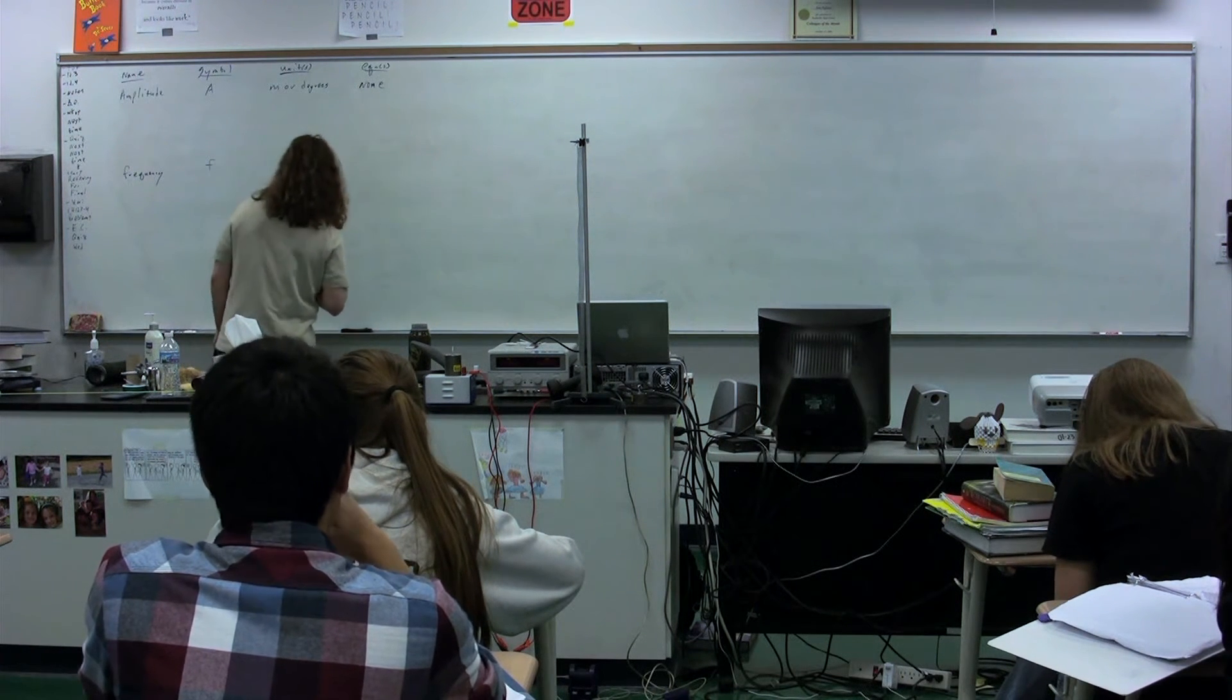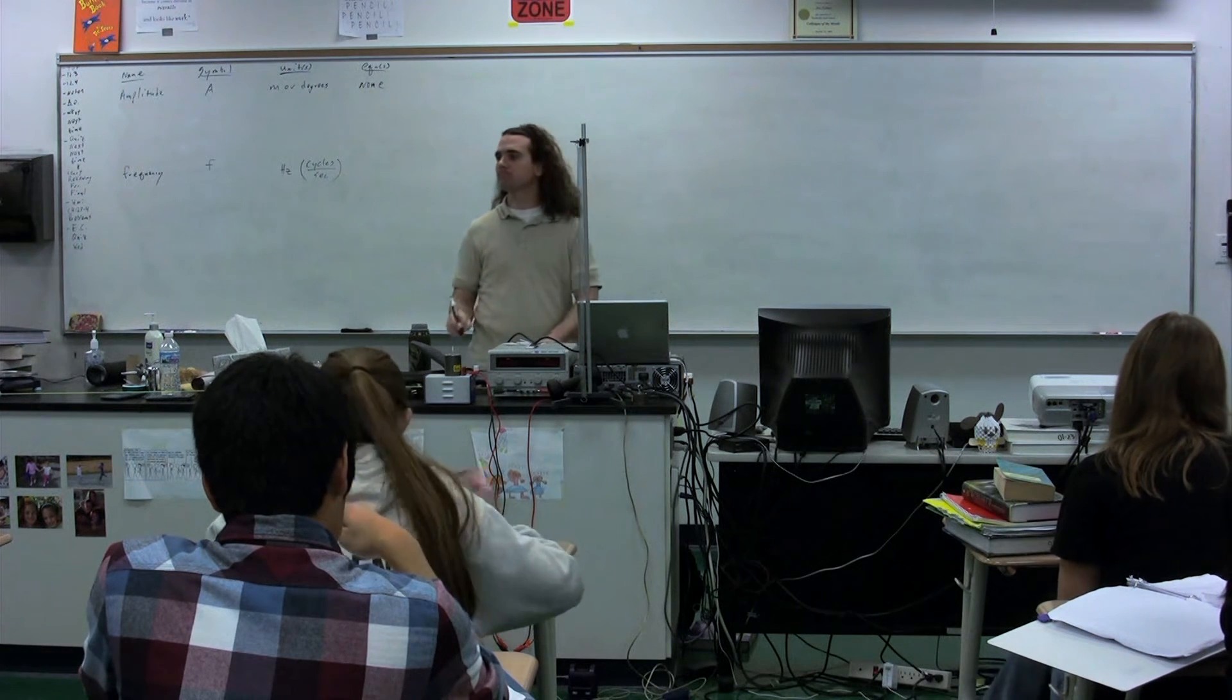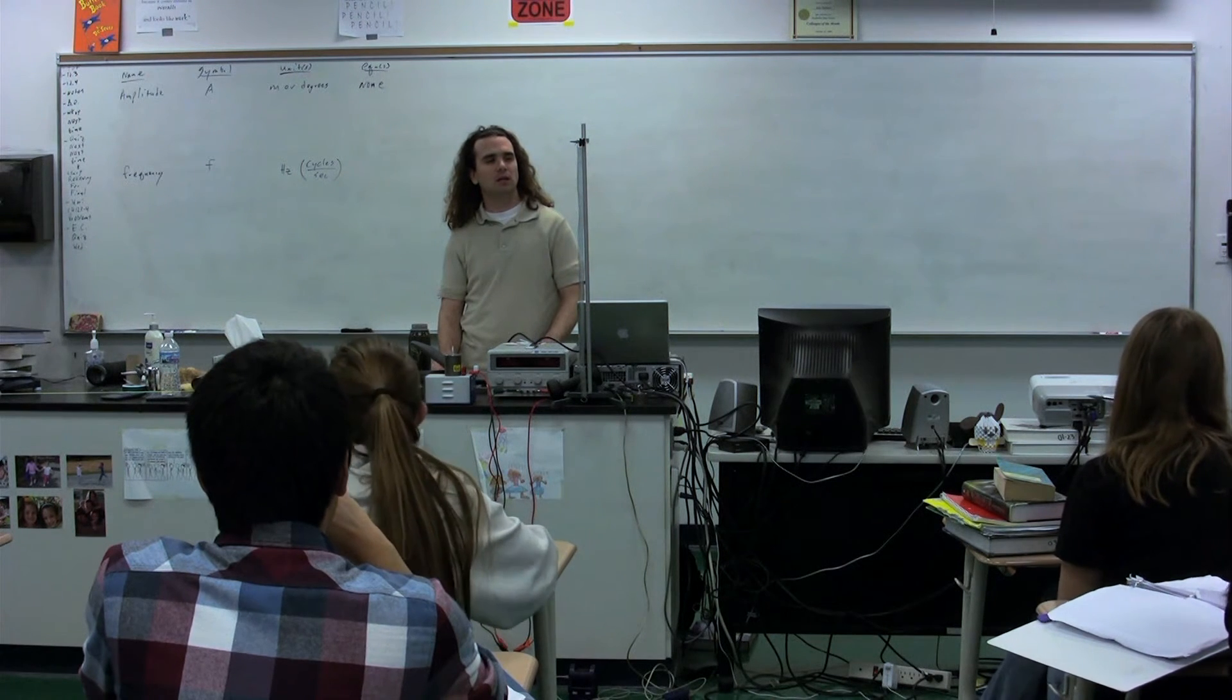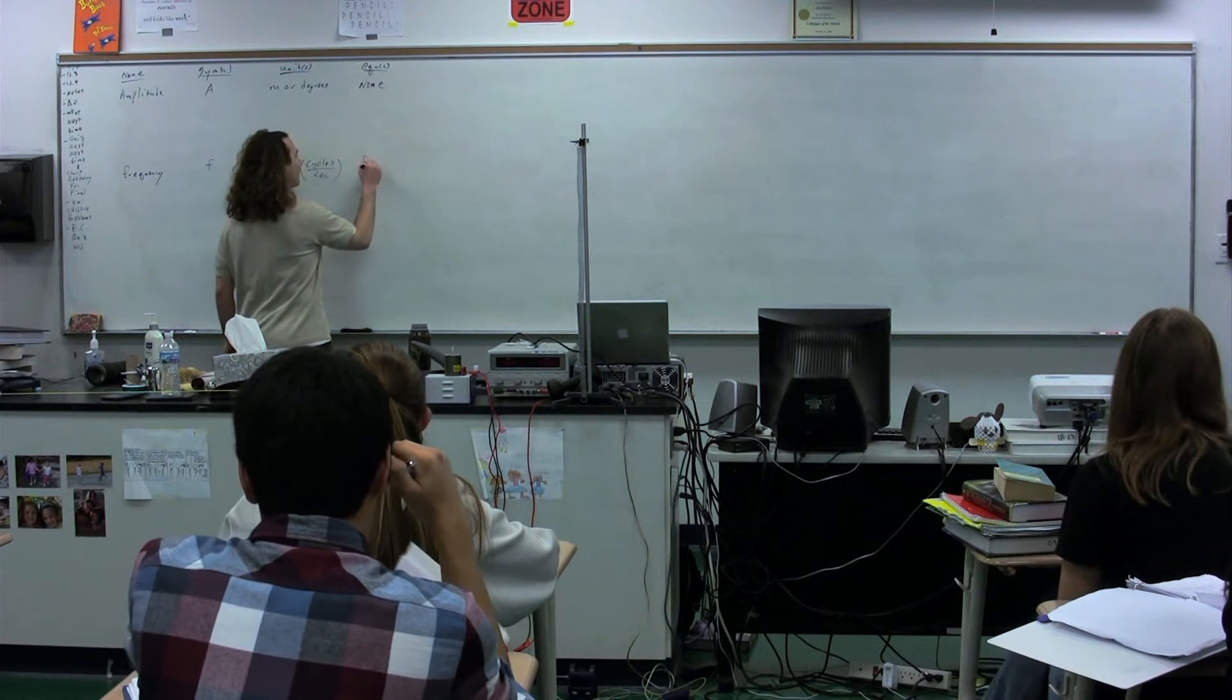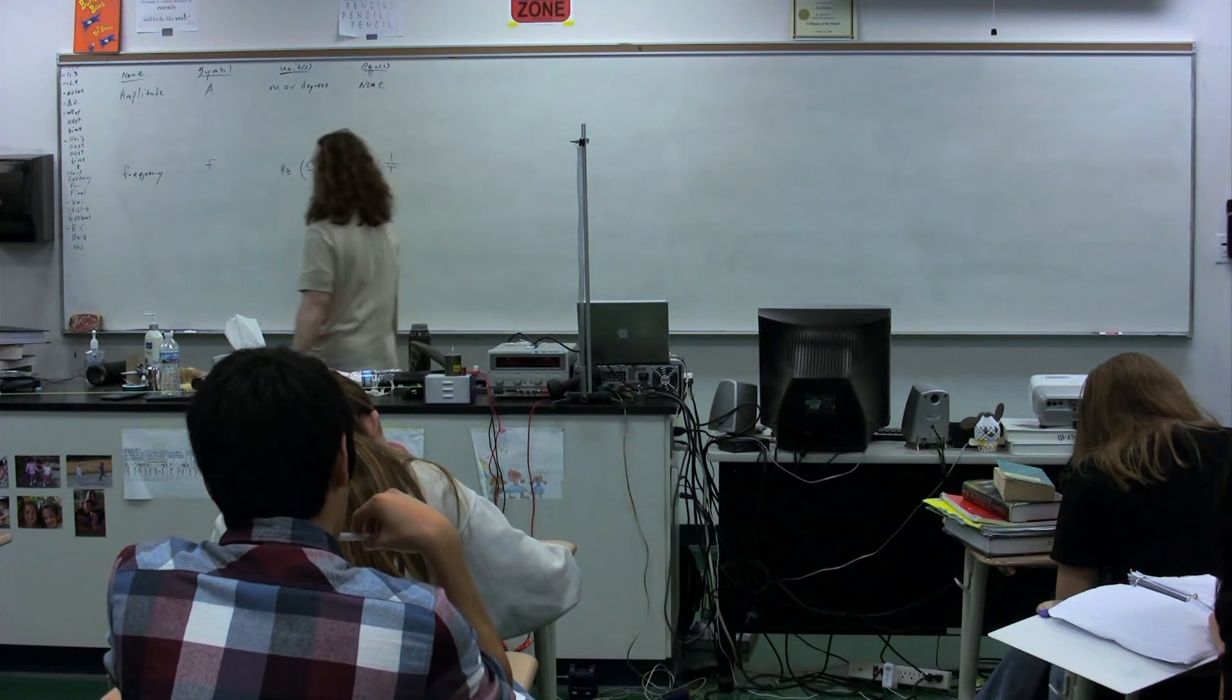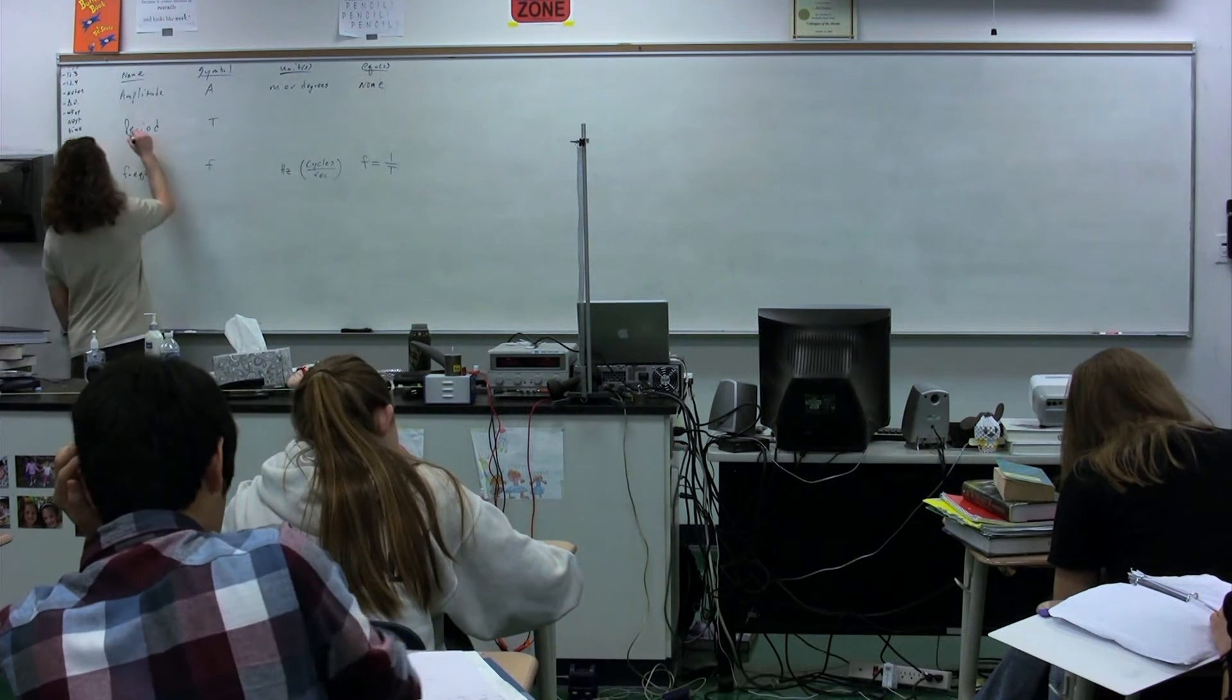Let's see. What is the equation we're going to use for frequency? Toi? Frequency equals one divided by the period. Good. One over the period, which, of course, brings us to the second one that we're going to add here, which is the period, symbol for which is a capital T.